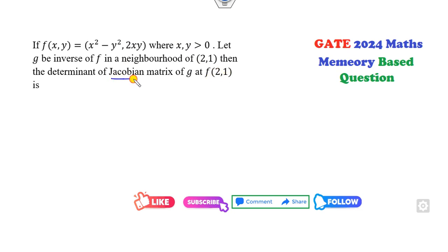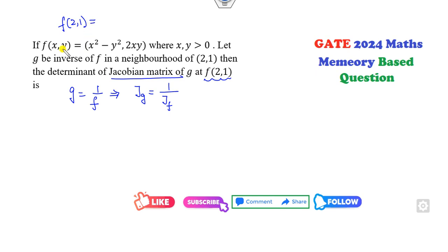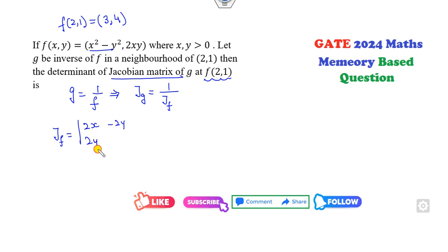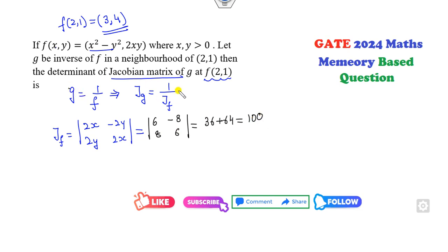Next question: f and g are given functions where g is the inverse of f. We need to find the Jacobian of g at f(2,1). First compute f(2,1): that gives the point (3, 4). Now compute the Jacobian of f — it is the determinant with partial derivatives with respect to x and y. At (3,4): entries are 6, −8, 8, 16, giving determinant 36 + 64 = 100.